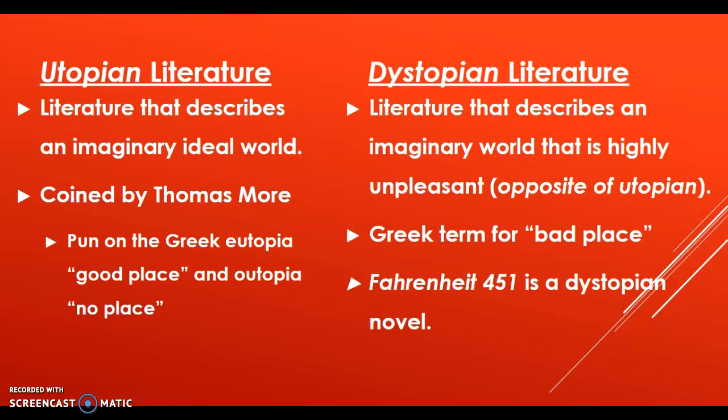We're going to talk about two different genres of literature: utopian and dystopian. Utopian literature describes an imaginary ideal world — we're talking about a world that is perfect, everything is peaceful, everything smells like roses. It is coined by Thomas More. Utopian is actually a pun on the Greek word 'eutopia,' which means a good place, or 'utopia,' which means no place.